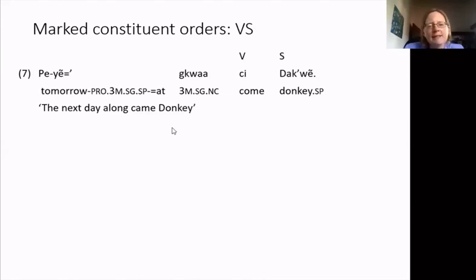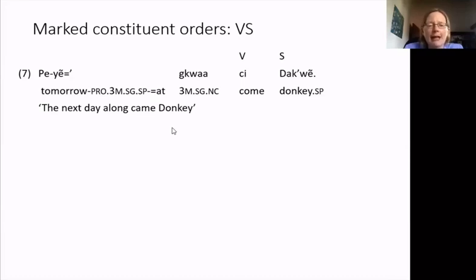The cause of VS constituent order is less clear, but some examples suggest that participant reference may play a role. In this example: 'The next day along came donkey.' In the discourse prior to this, donkey has been introduced and taken part in the narrative events. Then he leaves the scene, and when he returns, he does so post-verbally. There are other examples suggesting that VS may be associated with indicating a contrast, or perhaps a clarification — the post-verbal material in particular would be a clarification.